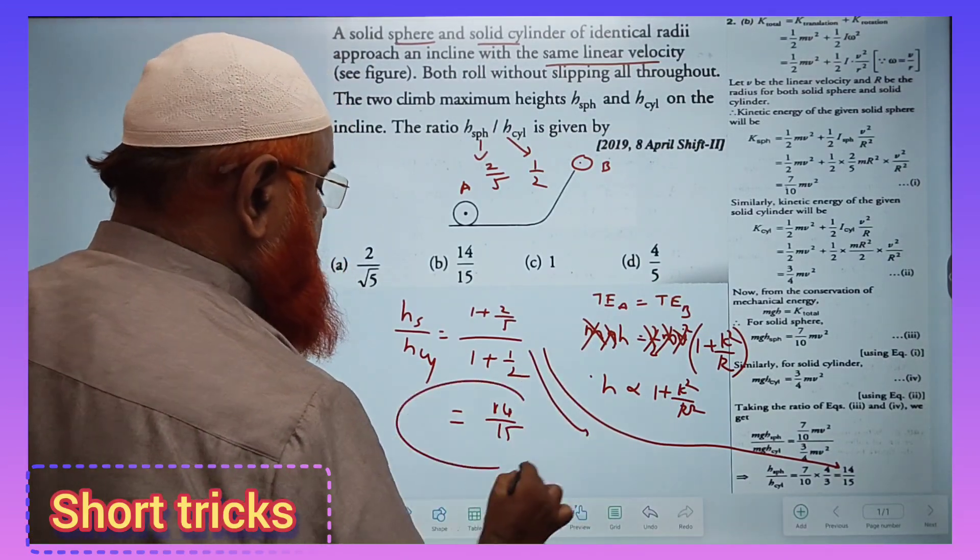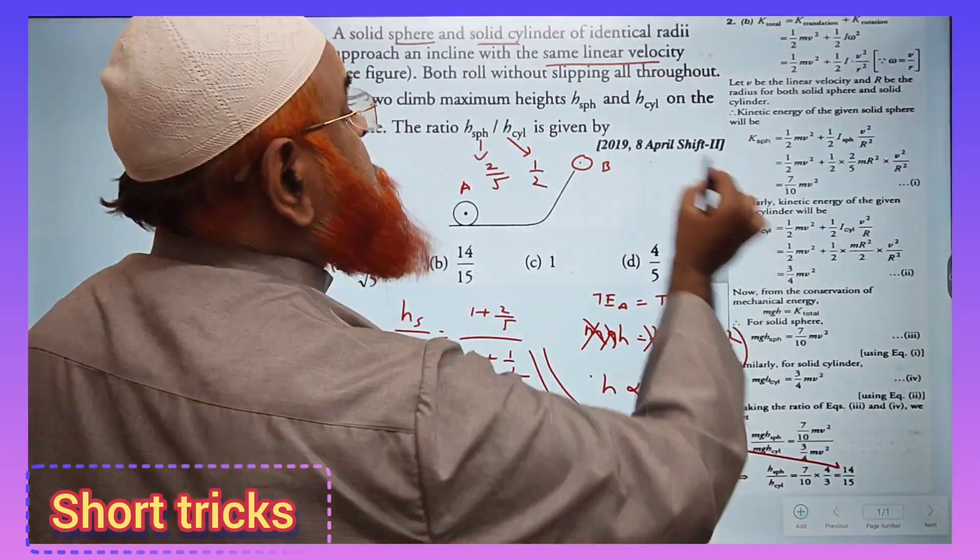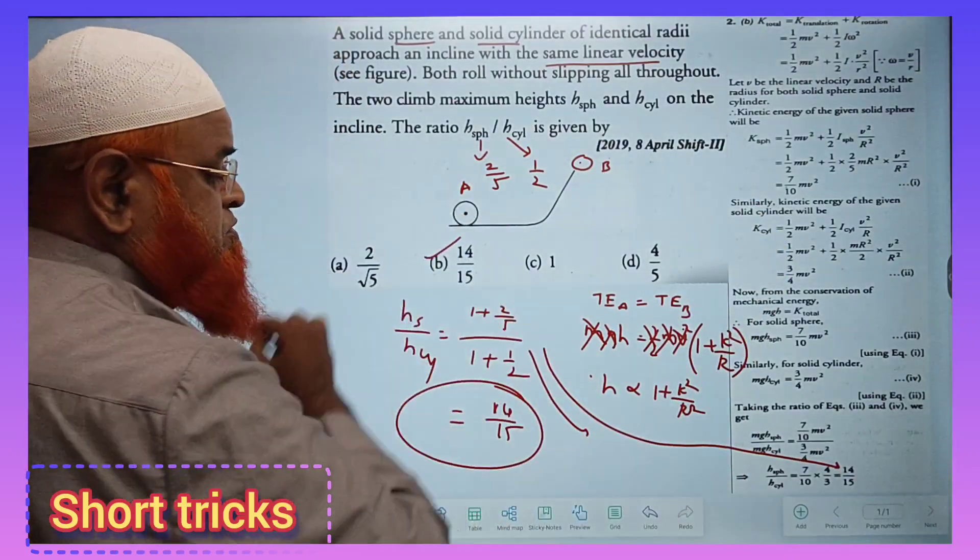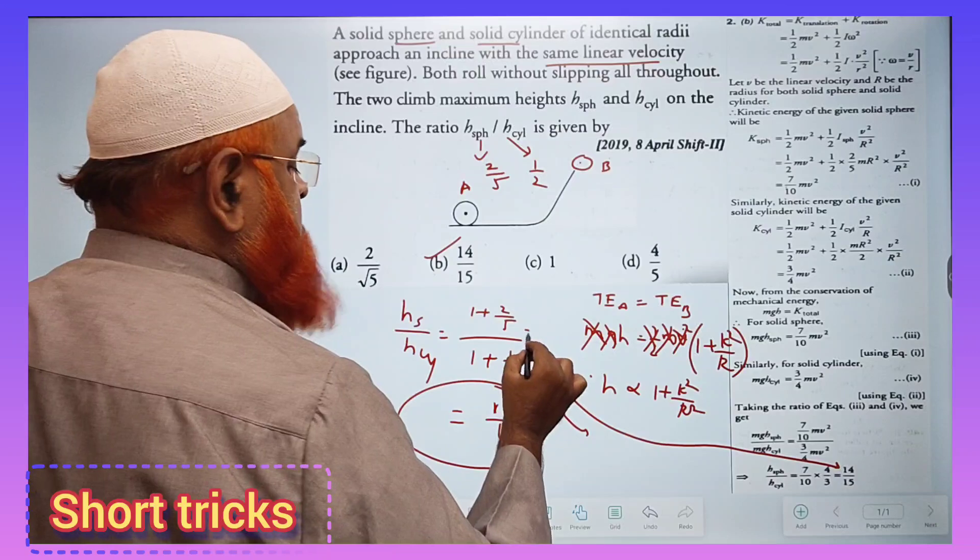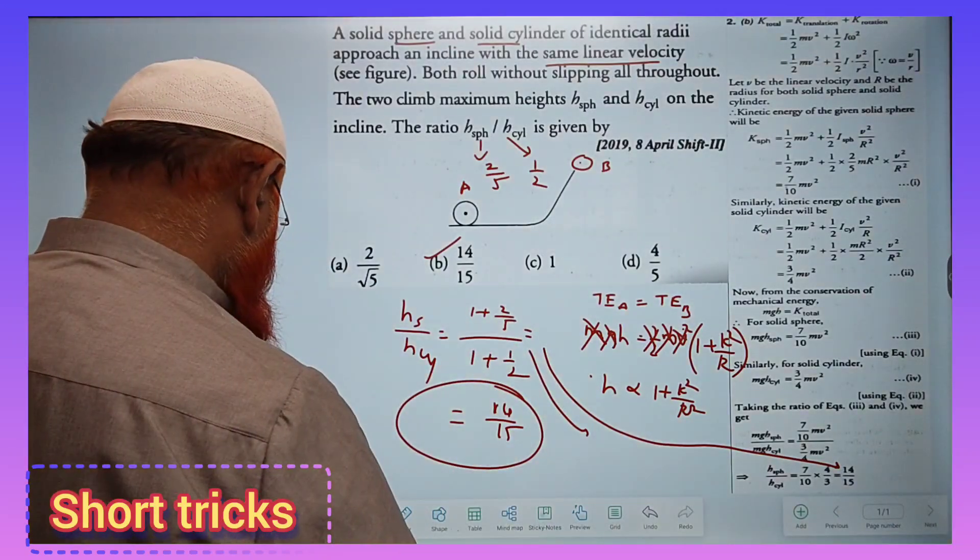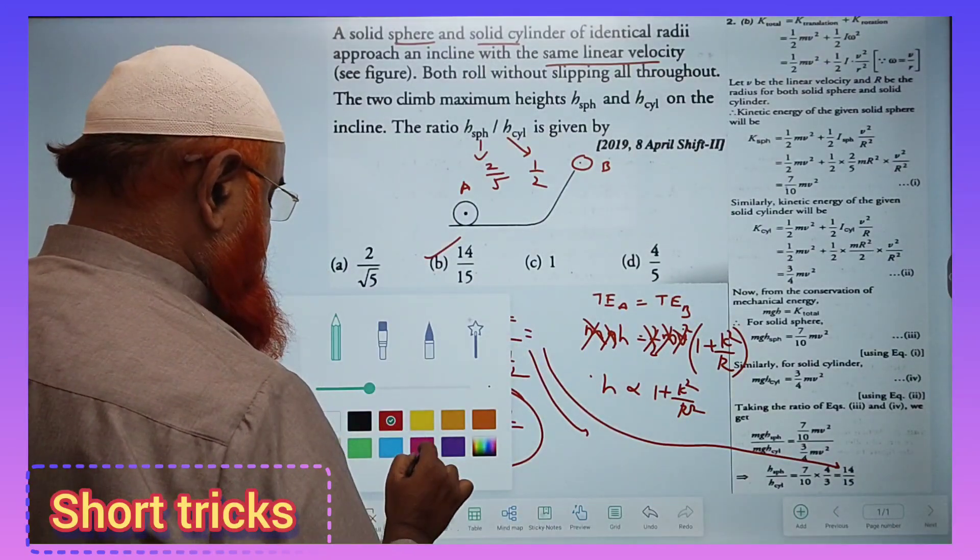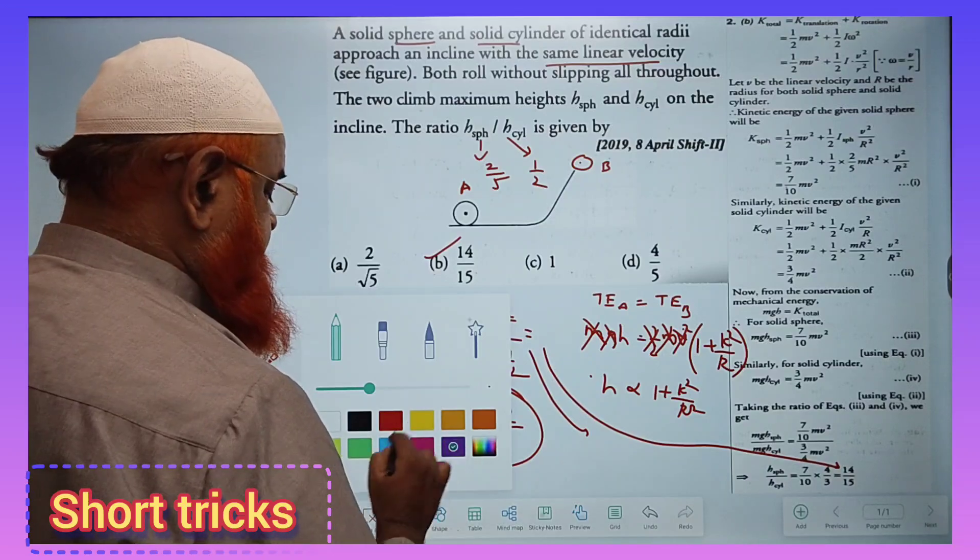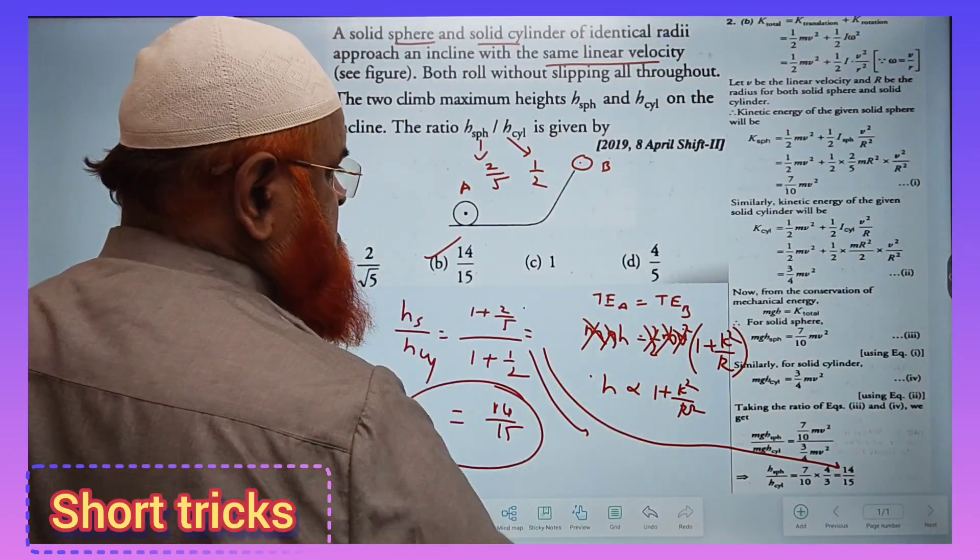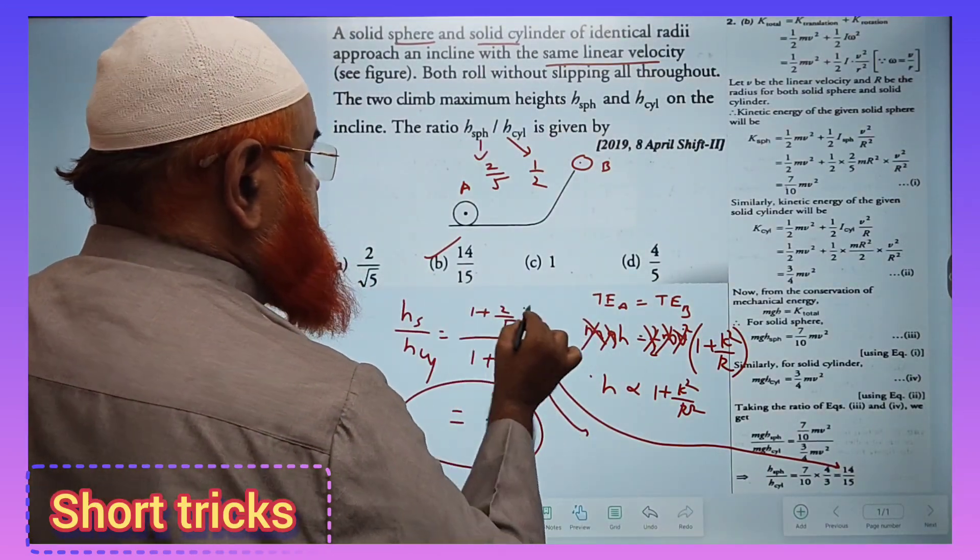This is the answer - option B. You can see this is 7/5 divided by 3/2.